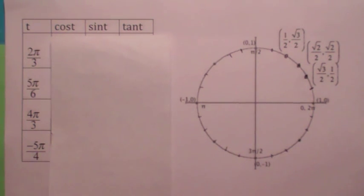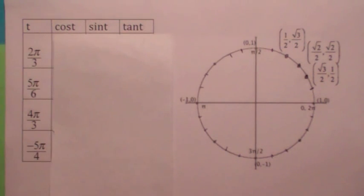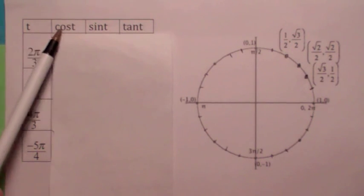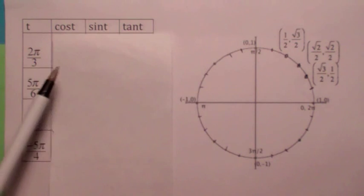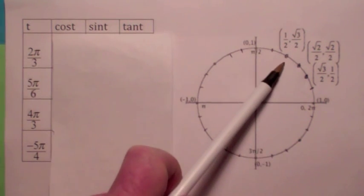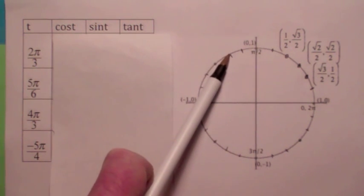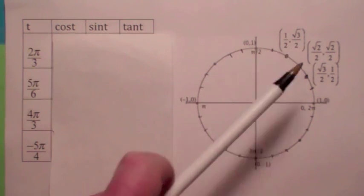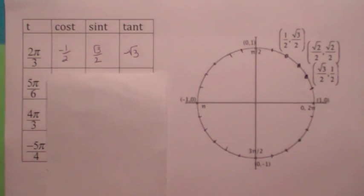Let's use these values and find trig values for points in different quadrants. If you're really good at section 5.1, this isn't that hard — if you can locate the point, you can find the trig functions. I'll focus on cosine, sine, and tangent since the other three are just reciprocals. For t = 2π/3, this is your π/3 reference, but it puts you in the second quadrant where x is negative and y is positive. So you get (-1/2, √3/2), and the tangent becomes -√3.